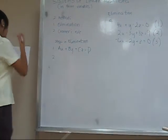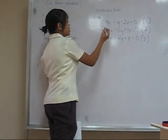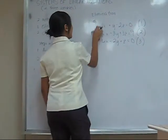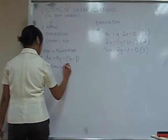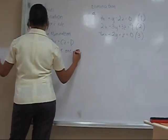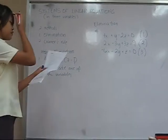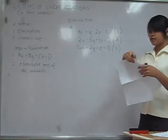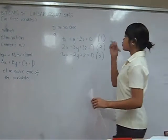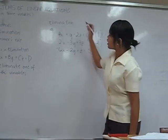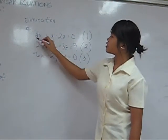Step two: choose to eliminate any one variable from any pair of equations. I choose equation number one and equation number two. To cancel y, I'm going to multiply equation number one by three on both sides.